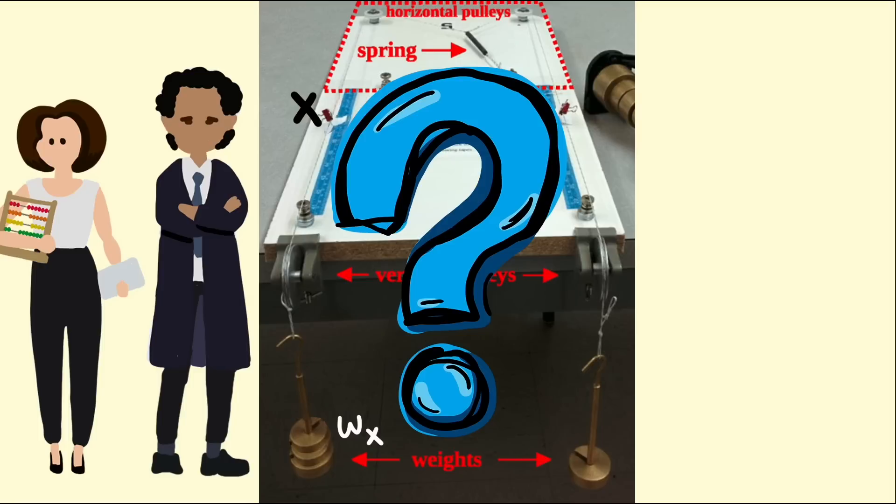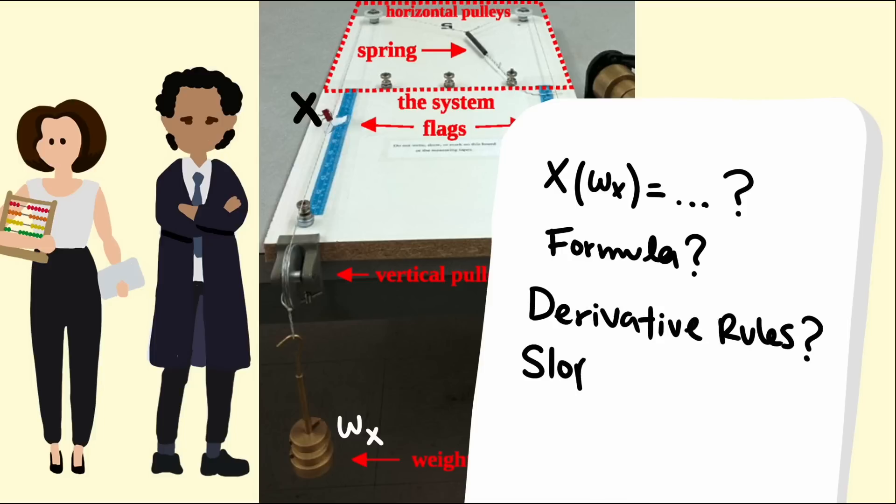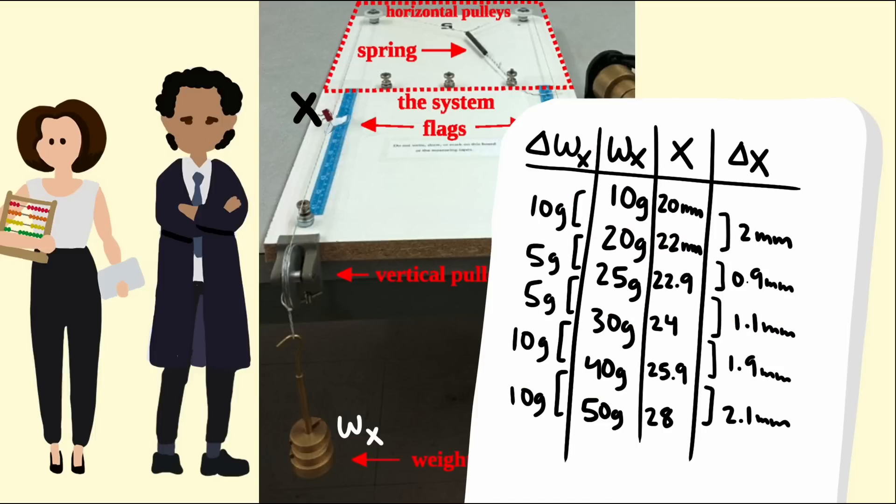What did the mathematicians do? They spent a lot of time trying to write down a formula for the positions and weights, so then they could apply the derivative rules and calculate the derivative that way. However, they never could write down a formula, and even though later they did gather some data to estimate the slope of the function that they couldn't complete, they never did find any estimate for the derivative.